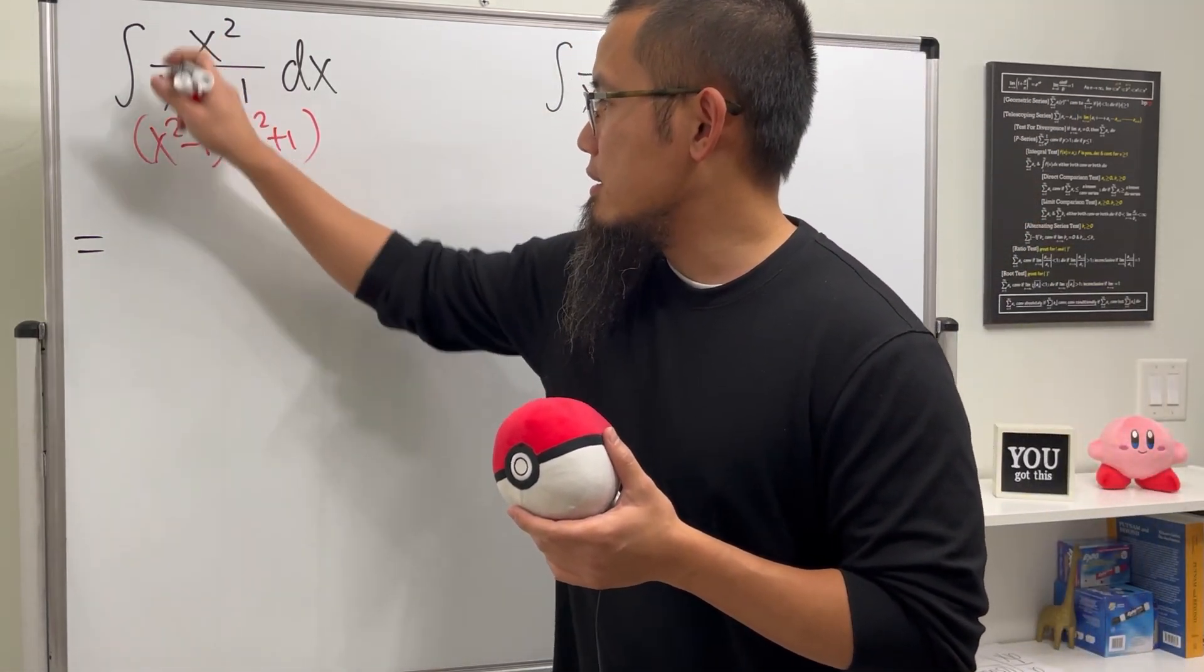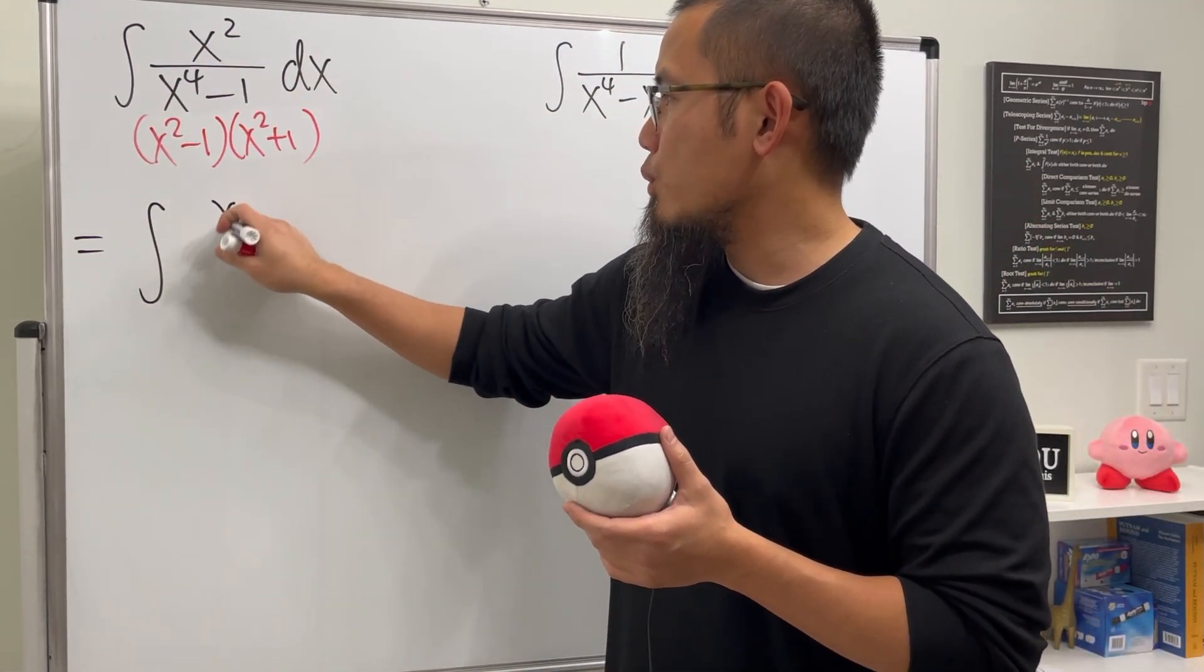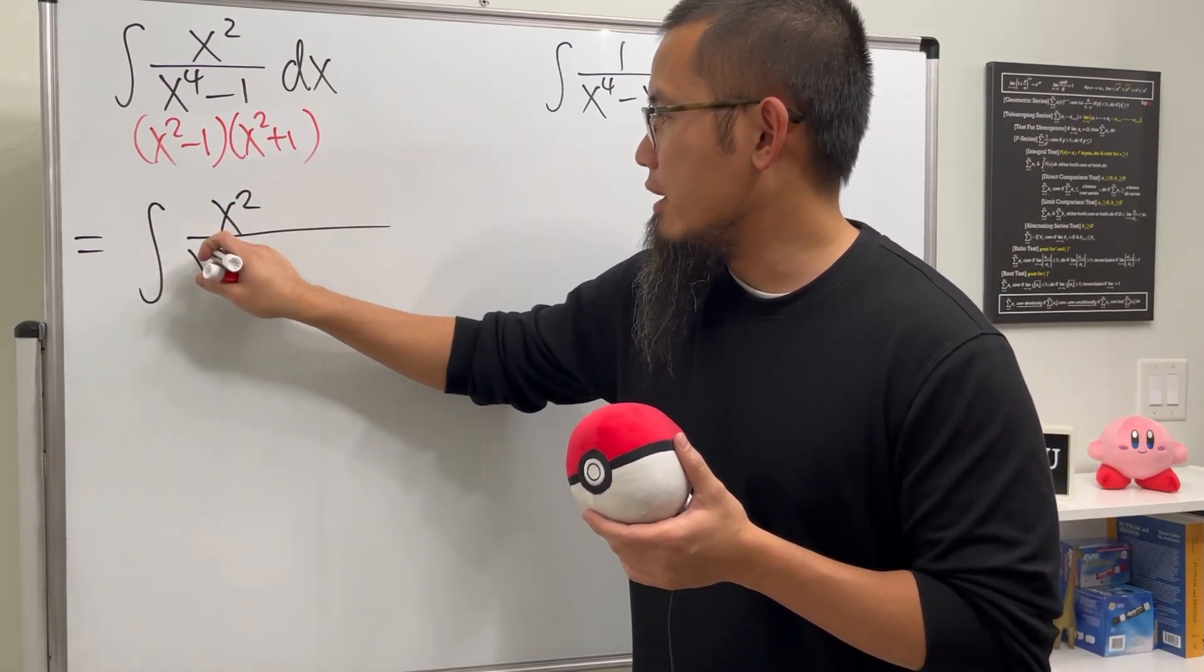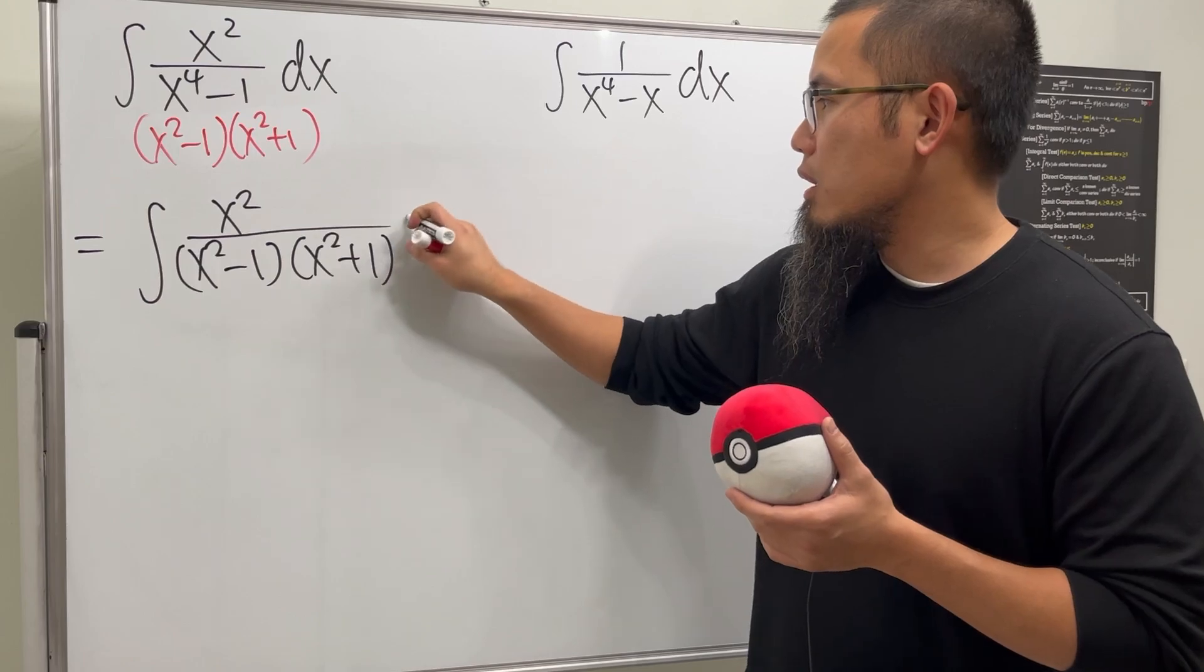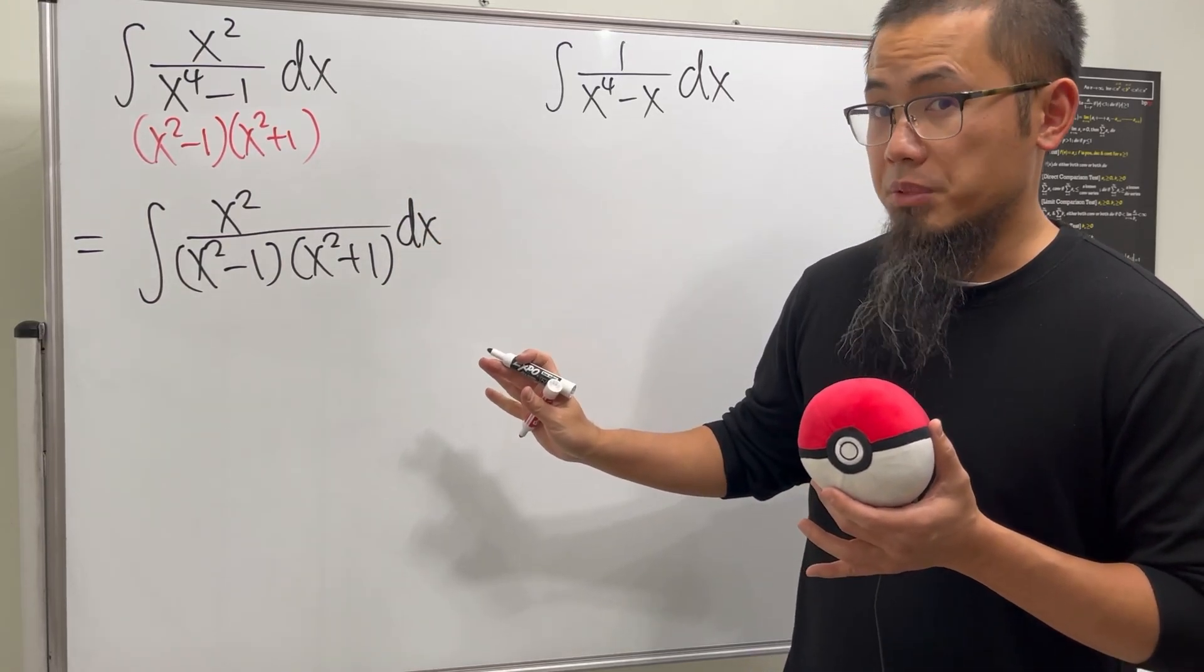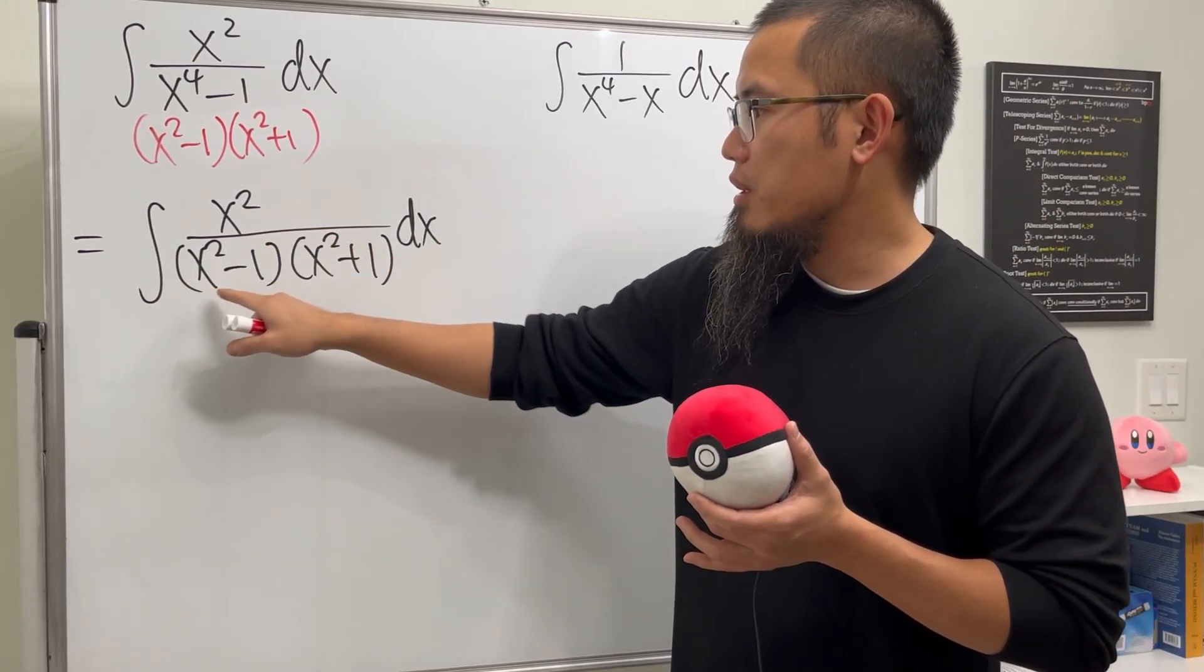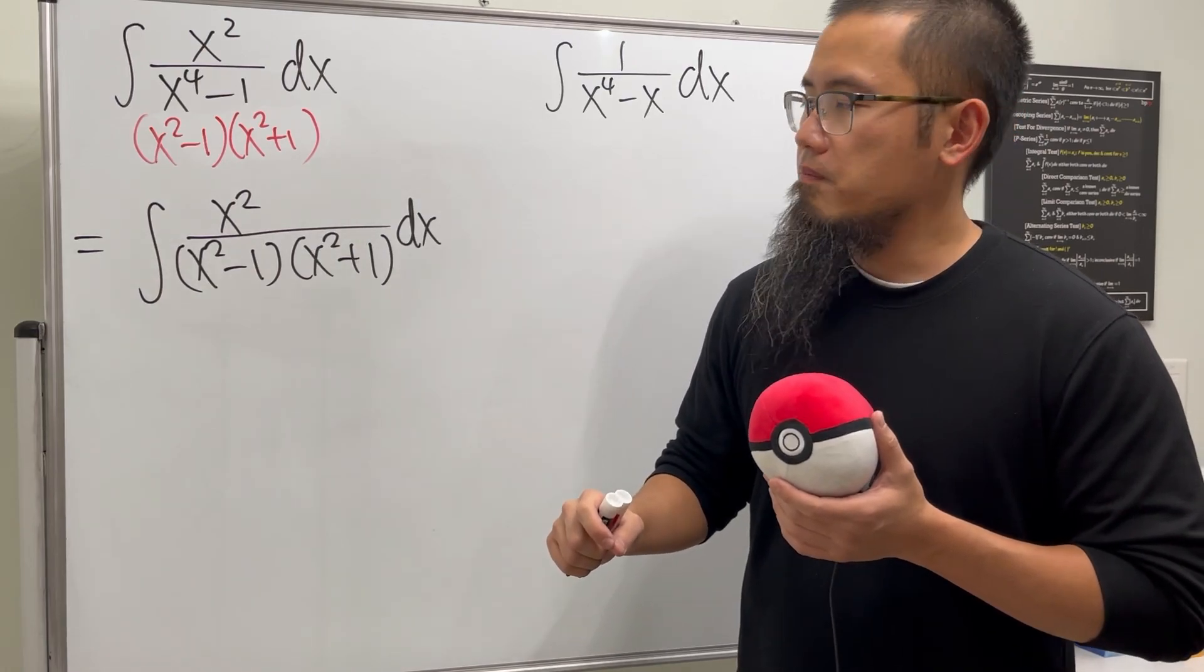Now, check this out. I am going to look at this as integral, and then we still have x² over x² - 1 times x² + 1. This is so nice, because we have the x² here, here, and here.